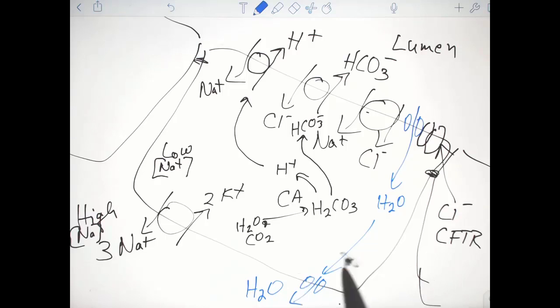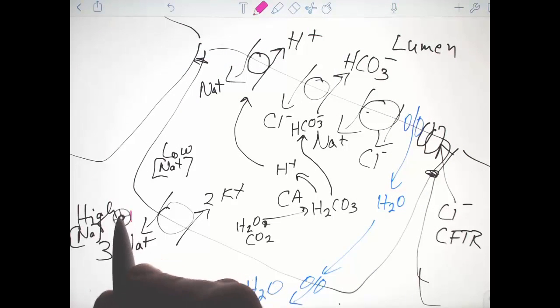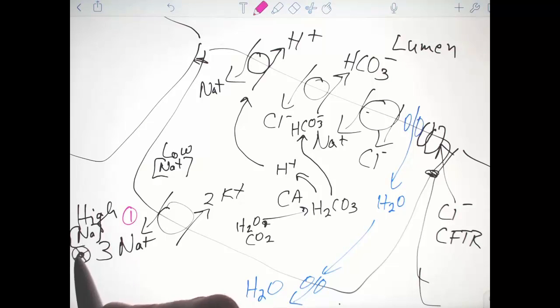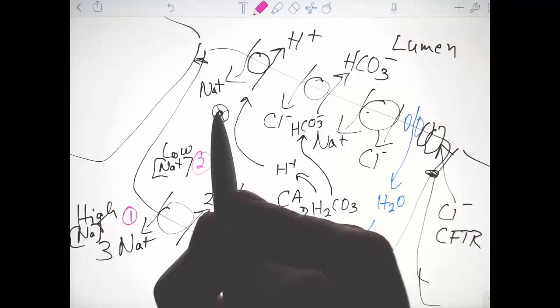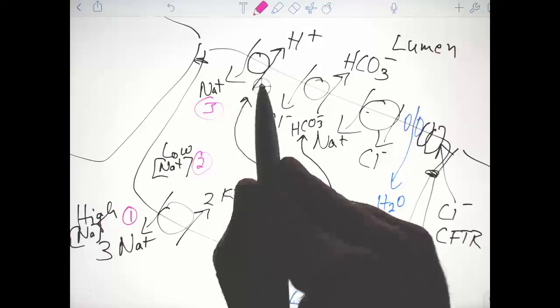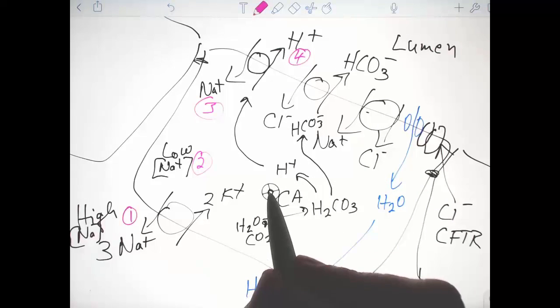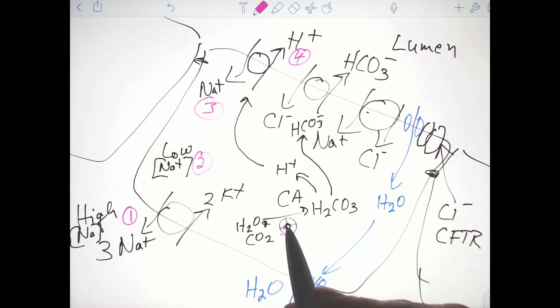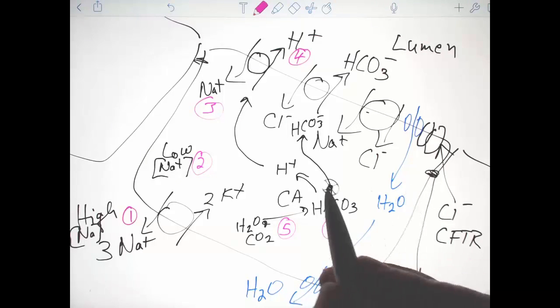Let me run through the steps in order. What's driving the process is the sodium-potassium pump, which creates high sodium outside, low sodium inside. That low sodium inside means that sodium will move in, causing protons to move out. Those protons are available because carbonic anhydrase has produced bicarbonate and protons.